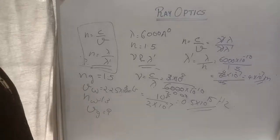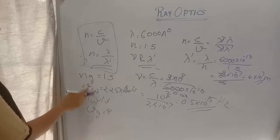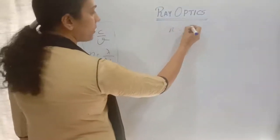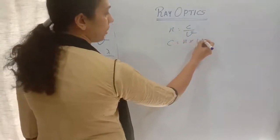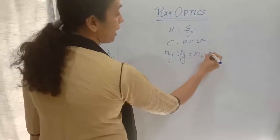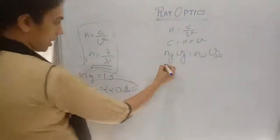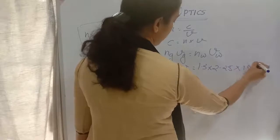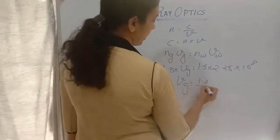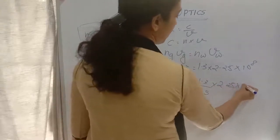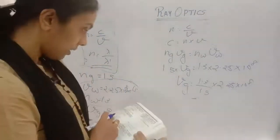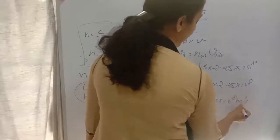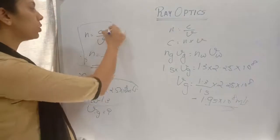Using n = C/V, we get C = n × V, so n_glass × V_glass = n_water × V_water. Therefore 1.5 × V_glass = 1.3 × 2.25 × 10⁸. Solving: V_glass = (1.3/1.5) × 2.25 × 10⁸ = 1.95 × 10⁸ m/s. The speed of light in glass is 1.95 × 10⁸ m/s.